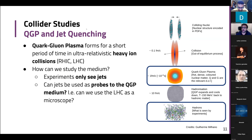Contrary to protons, which are very small, heavy ions are quite big comparatively speaking. When you collide them at relativistic speeds, they will look like pancakes because of Lorentz contraction. Once they cross and overlap, you are going to produce something called a quark-gluon plasma, which is a hot, dense colored nuclear matter where the quarks and gluons are the degrees of freedom.